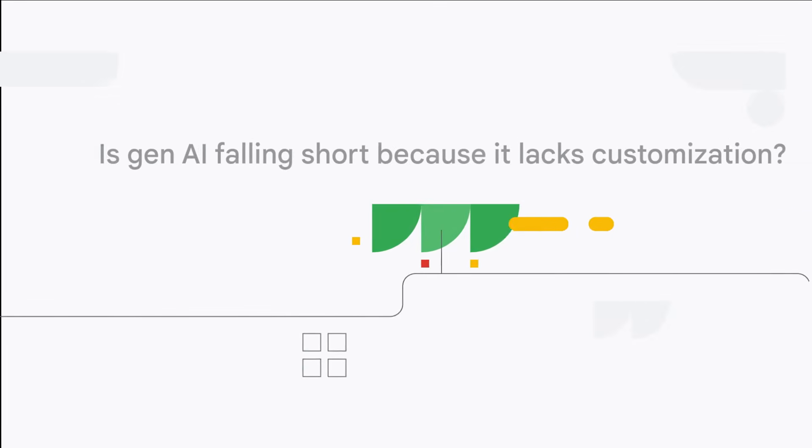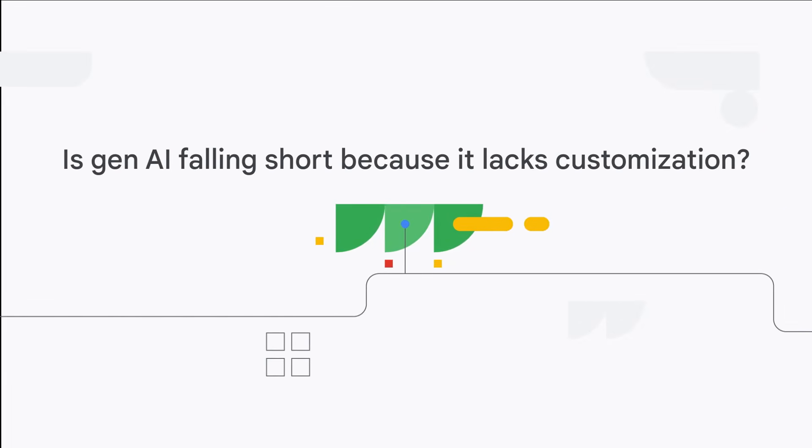Second, is Gen AI falling short because it lacks customization? Perhaps it doesn't quite understand your specific needs or generates outputs that seem a bit off — those chatbots that sometimes seem to have a mind of their own. Either way, every time one of those two things happen, write it down, save it somewhere, and bring it up at a team meeting. These are the exact use cases that are going to make the biggest difference in your organization.